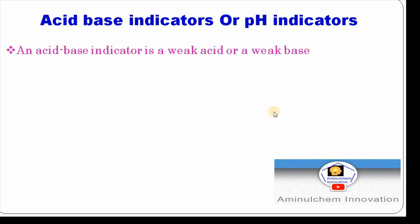Acid Base Indicators is a weak acid or a weak base and these are the substances that change color with pH or hydrogen ion concentration in solution.